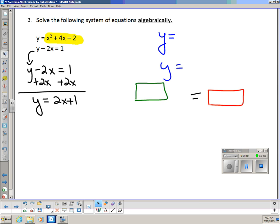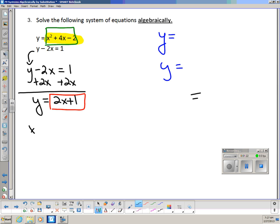So now, as you see, I have my y equals this and my y equals this. So what do I know about those two pieces? They, themselves, are equal to each other. So I'm going to have x squared plus 4x minus 2 is equal to 2x plus 1.